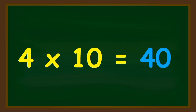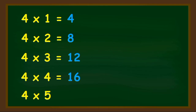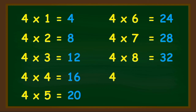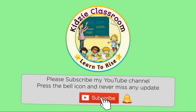So now we will learn again. Let's start. Four ones are four, four twos are eight, four threes are twelve, four fours are sixteen, four fives are twenty, four sixes are twenty-four, four sevens are twenty-eight, four eights are thirty-two, four nines are thirty-six, and four tens are forty.